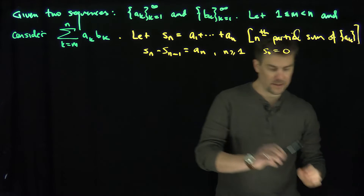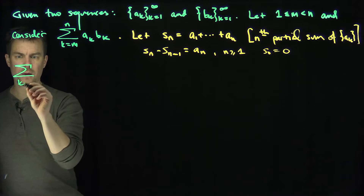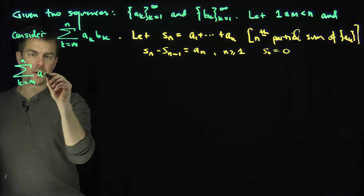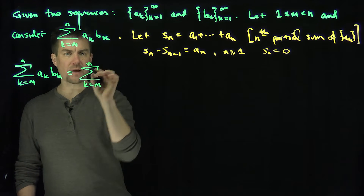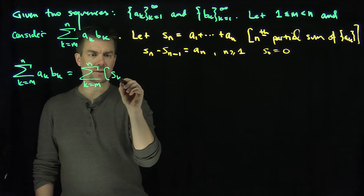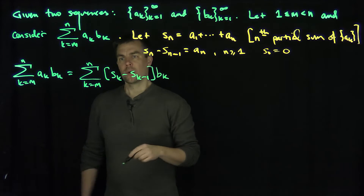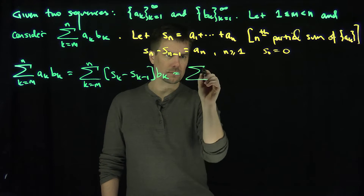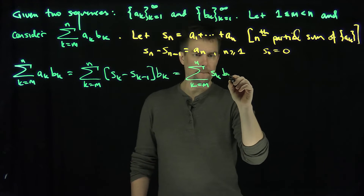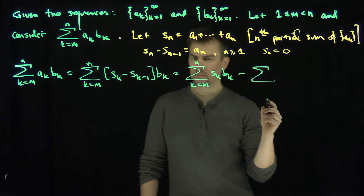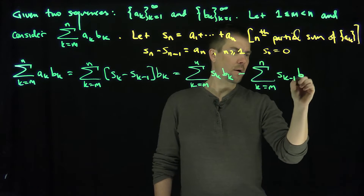Now we're going to basically integrate by parts. We take our sum — the sum of a_k * b_k for k from m up to n — and rewrite a_k as S_k minus S_{k-1}. Then we break this into two sums: the sum of S_k * b_k minus the sum of S_{k-1} * b_k, both for k from m up to n.